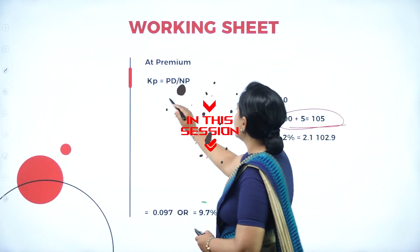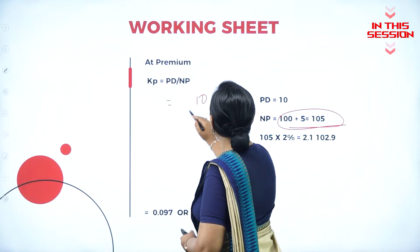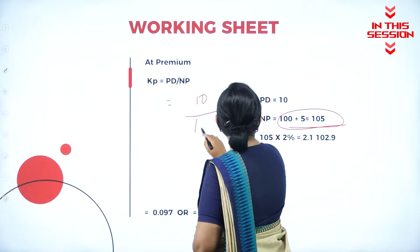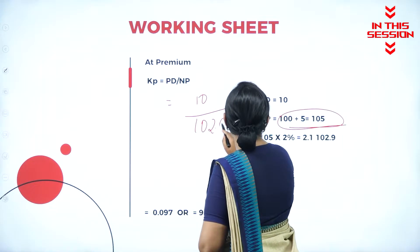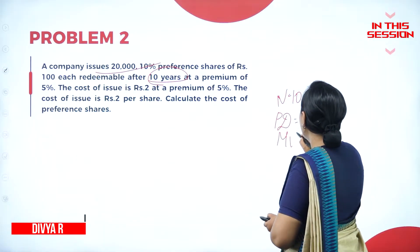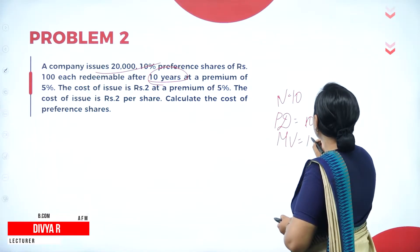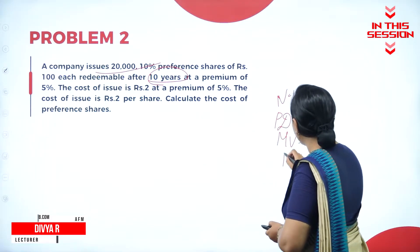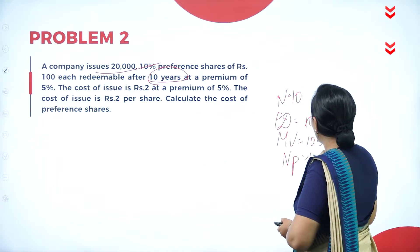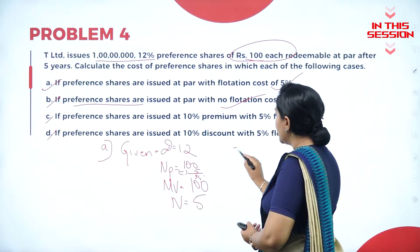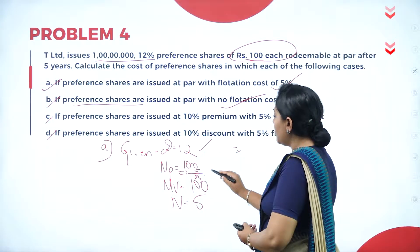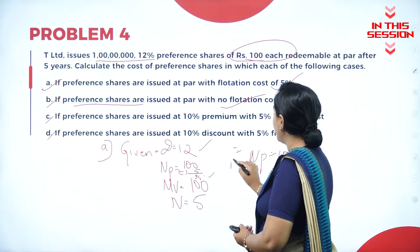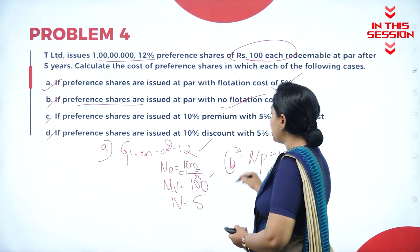Preferential dividend is 10 rupees. Net proceeds will be 102.9. Maturity value will be 100 into 5 percent, it is 105 rupees. Net proceeds is 100 rupees with no flotation cost. KSP remains the same, but the net proceeds will be 100 rupees for KSP. Rest of the things remains the same.